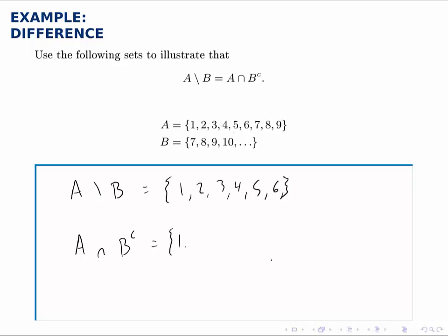Well, we get the same answer, of course. It's the same reasoning, what's in A but not in B, and that's 1, 2, 3, 4, 5, and 6.